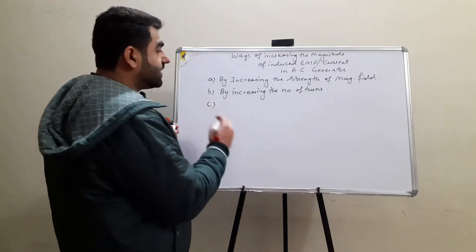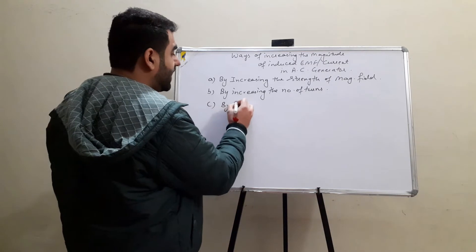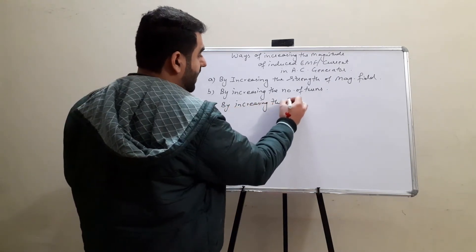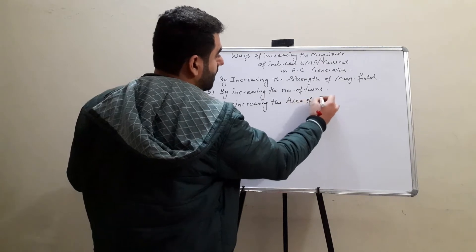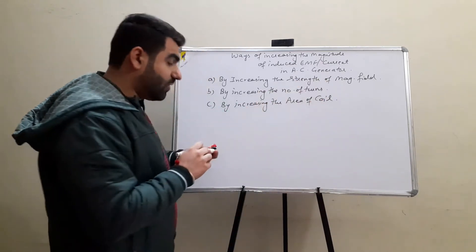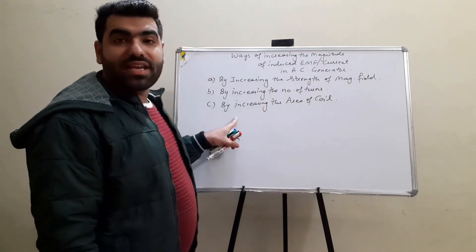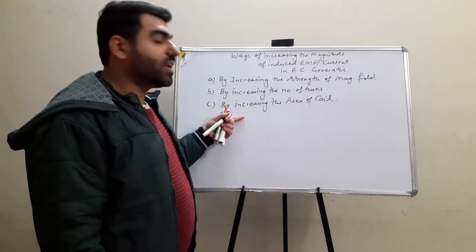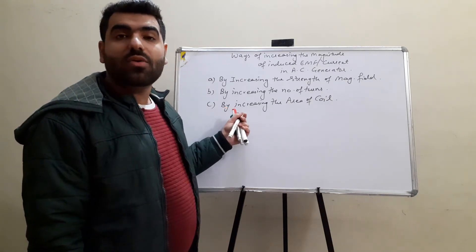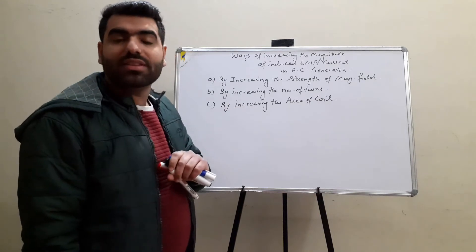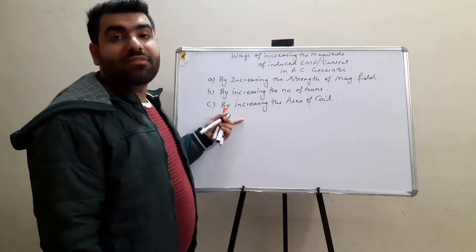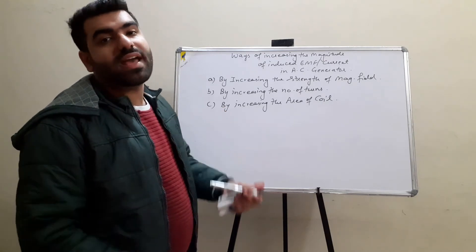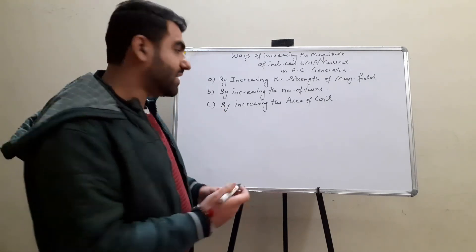The third case is by increasing the area of the coil. By increasing the area of the coil, the amount of flux linked with the coil increases, and with that increase, when it changes, the change will be maximum, and hence the induced EMF will also be maximum.